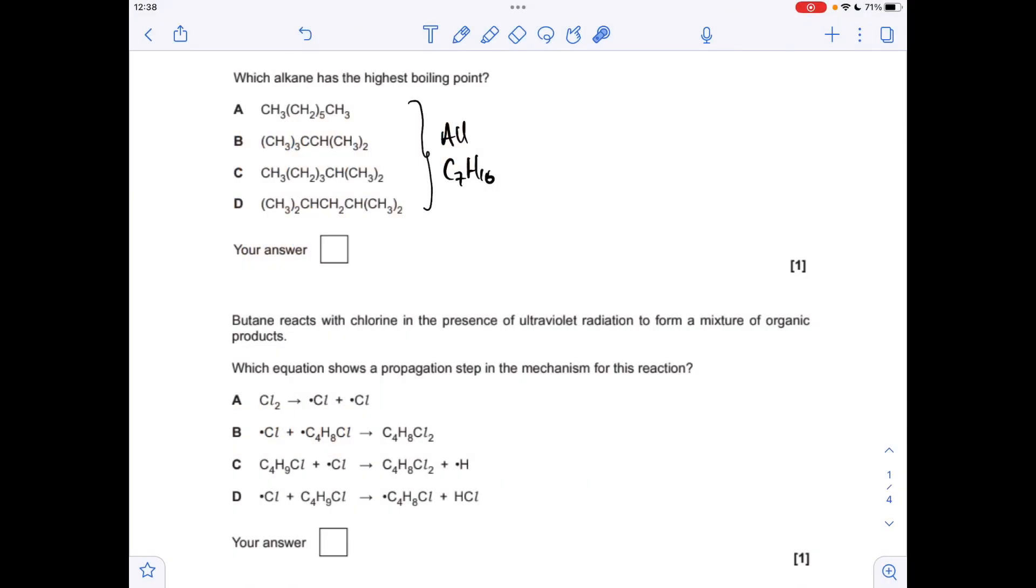Okay, so make a start. Which alkane has the highest boiling point? Well they're all C7H16, so they're all structural isomers. Being a bit awkward with the way they've presented the formula, so it's structural formula, which is probably the least friendly.